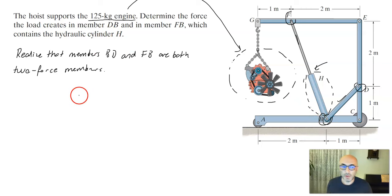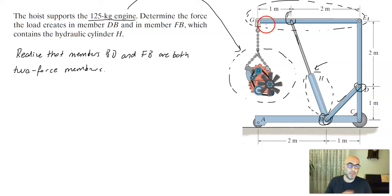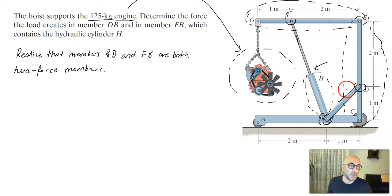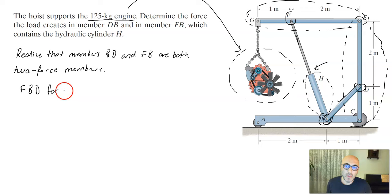We will write an equilibrium equation for member GE to find the force FFB, then draw a second free body diagram for the vertical member EC — which is pinned at C and at E and includes force BD acting on it.